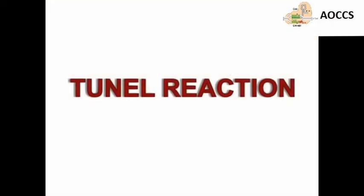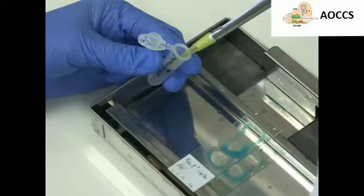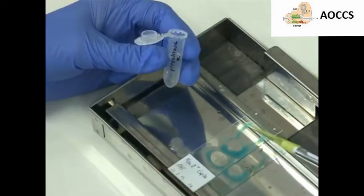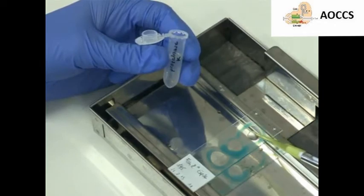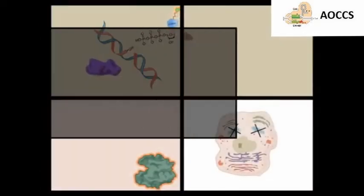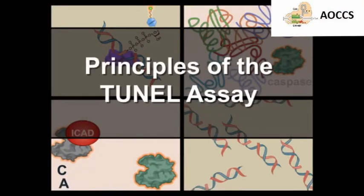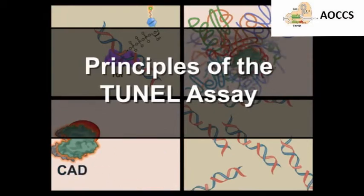This video will explain how the TUNEL assay can be used to label cells undergoing apoptosis, a step-by-step protocol for performing this method in tissue sections, and how researchers are applying this technique to understand mechanisms of cell death. Before delving into the protocol of the TUNEL assay, let's discuss the principles behind this technique.